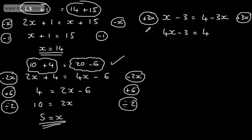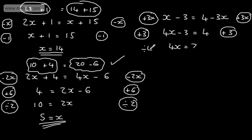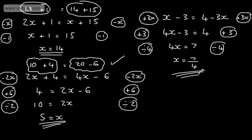I only want 4x here, so I'm going to add 3 to both sides. Adding 3 to both sides gives 4x equal to 7. At this stage I want just x, so I'm going to divide both sides by 4. Dividing both sides by 4, I end up with a fraction as my answer: x equals 7 over 4. That's perfectly fine — it doesn't have to be a whole number; it can be a fraction.